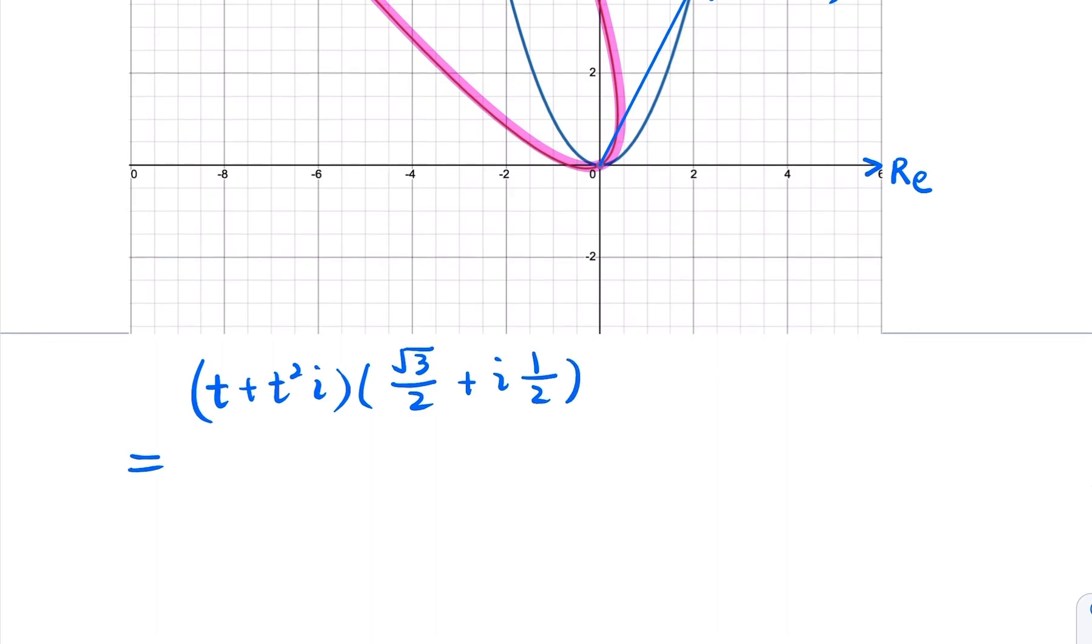So this is a simple complex number of multiplication. The real part is going to be square root of 3 over 2 t. And the other one, i times i, that's negative 1, so the whole thing would be negative t squared over 2. So that's already accounted for. Plus the imaginary part is going to be this part times this, 1 half times this t. So it's going to be 1 half of t plus square root of 3 over 2 t squared.